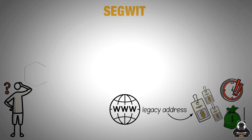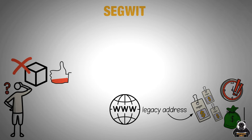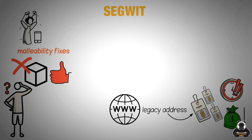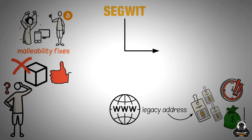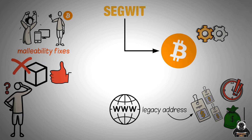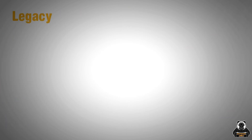This leads to faster transaction times and lower fees. It's also worth noting that SegWit is not just a block size increase — it also comes with a host of other improvements, such as malleability fixes, which makes it much harder for attackers to change transaction IDs. This benefits both users and businesses who rely on Bitcoin for payments. Overall, SegWit is a significant upgrade to the Bitcoin protocol that offers numerous benefits. However, the original protocol can still be used and was named legacy after SegWit's activation.